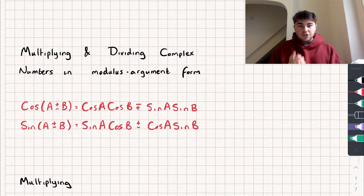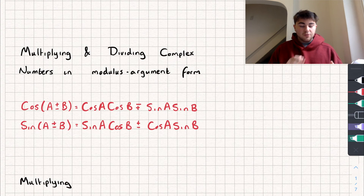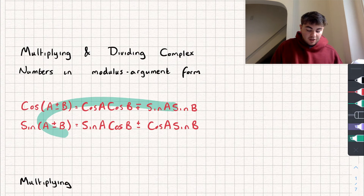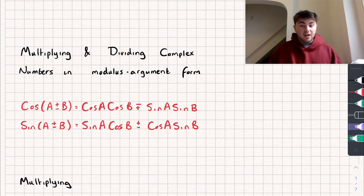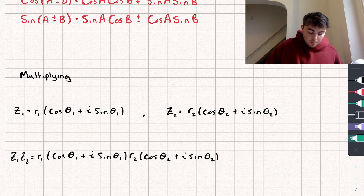I'll add timestamps as usual to the different parts of the video so you can skip through to the part that you want to see. We're going to start off with the generic rules for multiplication and division of complex numbers in this form. For this you're going to need to know the sine and cosine angle addition formulas, but they're written right there, so if you haven't seen them before, that's what they are — written in red.